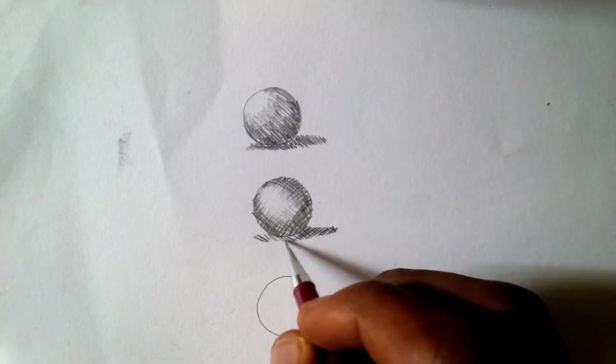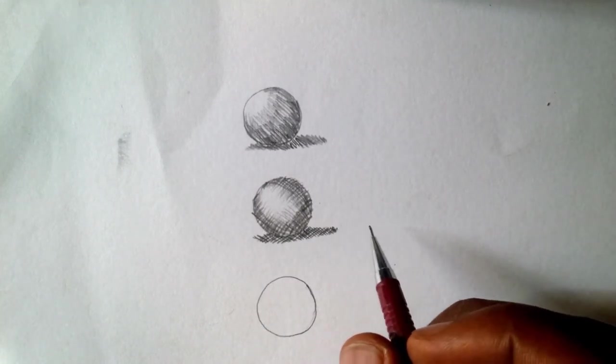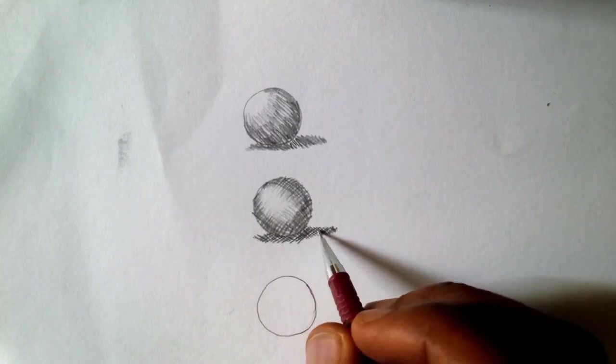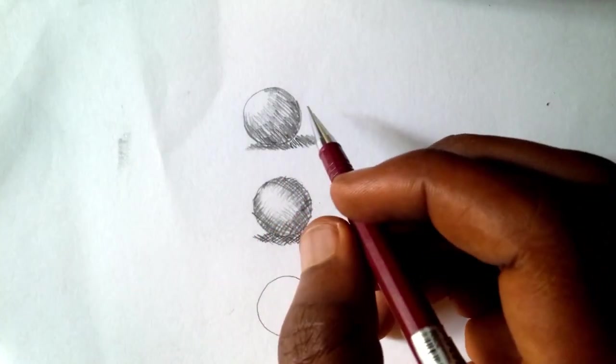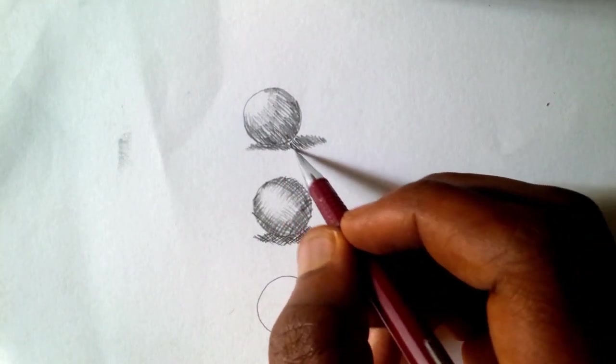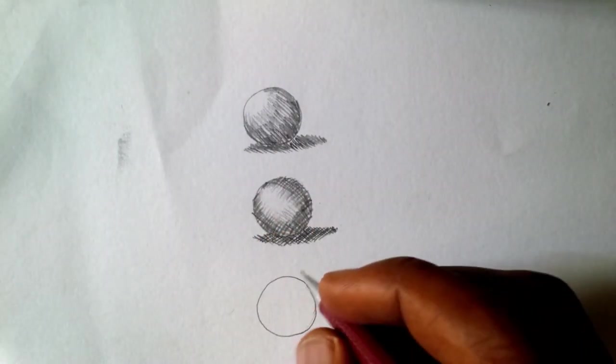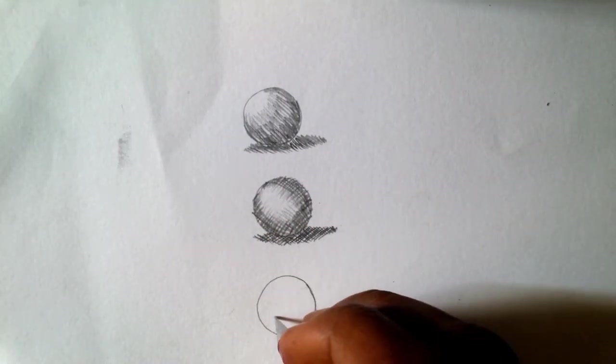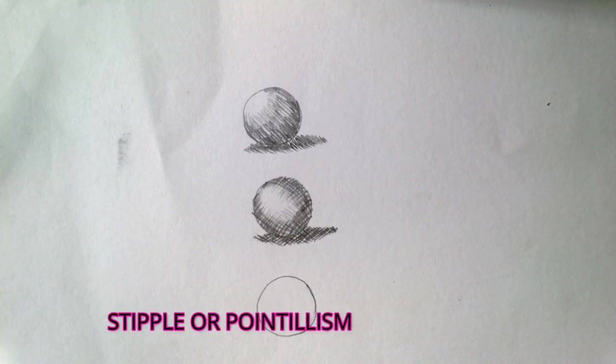The difference between hatching technique and cross-hatching technique is the direction. In hatching technique, you draw lines in one direction. In cross-hatching technique, you draw lines crossing each other.